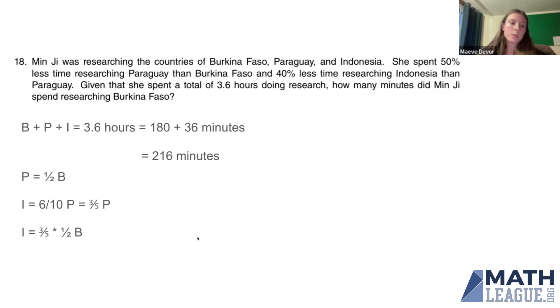So, let's go ahead and substitute in. We know that P is 1 half B, and I is 3 fifths times P. So, it's 3 fifths times 1 half B, which is 3 tenths B.